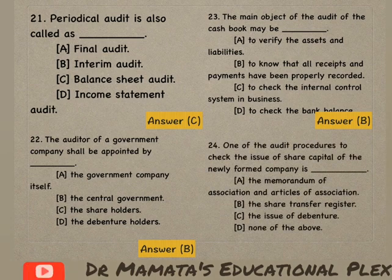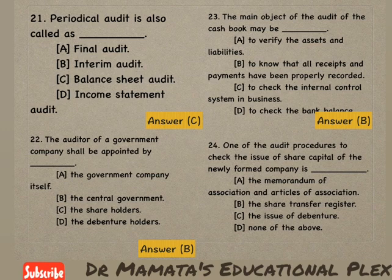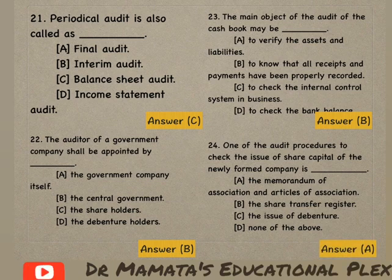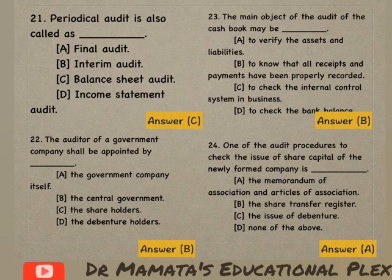Next question: One of the audit procedures to check the issue of share capital of a newly formed company is — the memorandum of association and articles of association, the share transfer register, the issue of debenture, or none of the above? Share capital register jo hota hai woh hota hai memorandum of association mein. Memorandum of association and articles of association are the strong registered documents for verification. So option A is the correct answer.